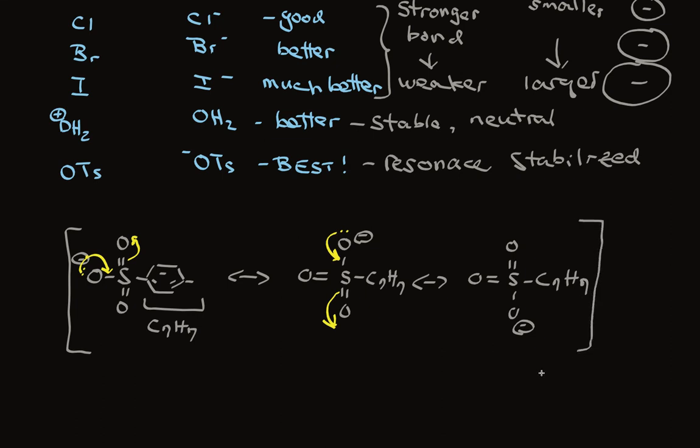And the key thing is that in each case the negative charge is on an oxygen atom that easily accommodates it. So all three of these resonant structures contribute strongly to a much more stable anion than we would have without the resonant stabilization. And that's why OTs is such a good leaving group.